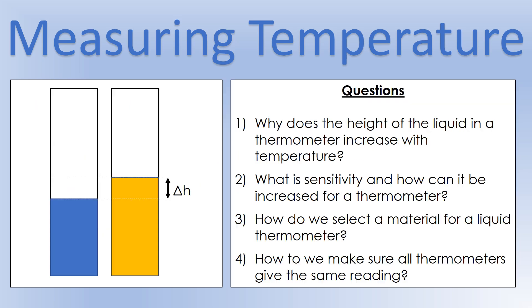First of all, liquid-based thermometers. As we go through, we're going to address essentially four questions. We're going to look at why the height of the liquid in a thermometer changes with temperature. We're going to look at what sensitivity is and how we can increase it. We're going to look at how we select what material we put into a thermometer. And we're going to look at how we make sure all thermometers, regardless of type, give the same reading.